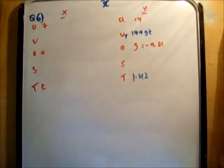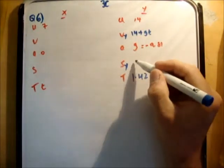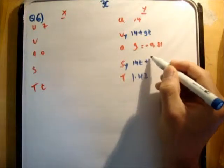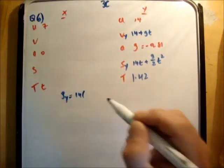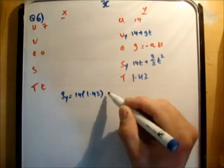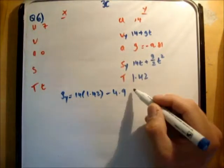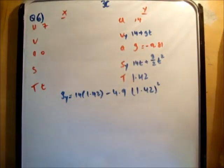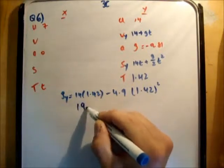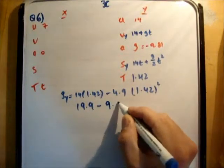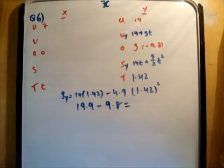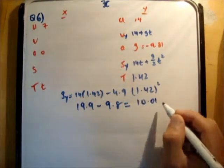Now we find that maximum height s sub y. Using s equals ut plus one half at squared, we get s sub y equals 14t plus g over 2 times t squared. Substituting t equals 1.42: s sub y equals 14 times 1.42 minus 4.9 times 1.42 squared, giving 19.9 minus 9.8, which equals approximately 10.01 meters.